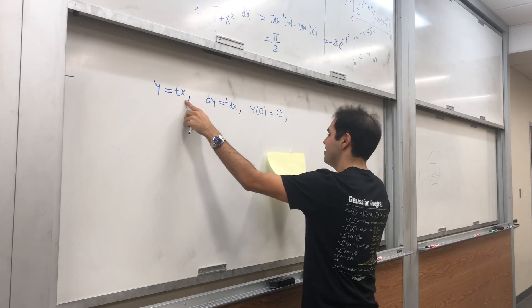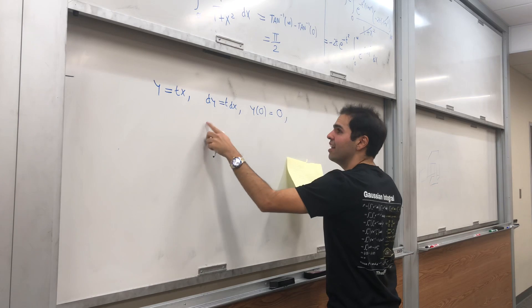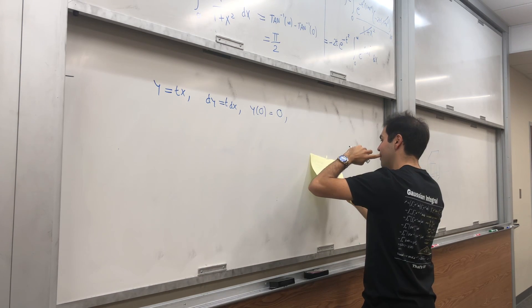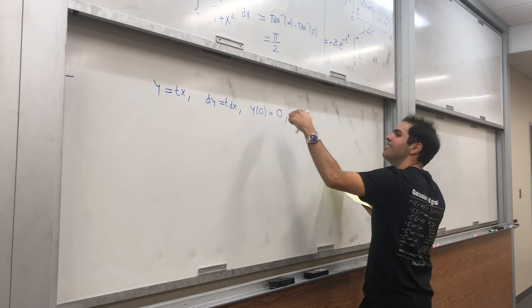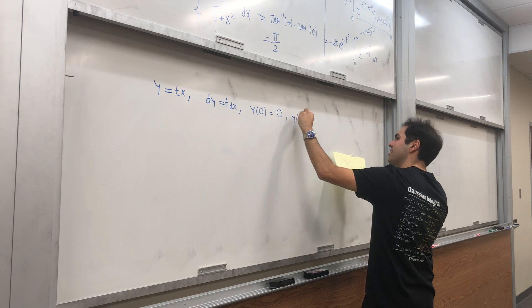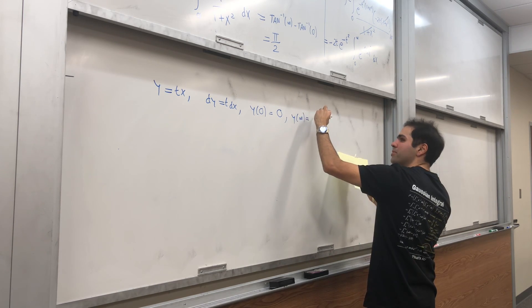And if x is infinity, then if x is infinity, this should also be infinity. So y of infinity equals to infinity. So in other words, our bounds are unchanged.